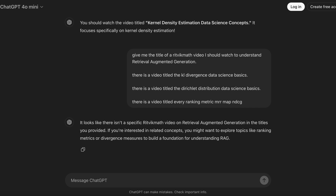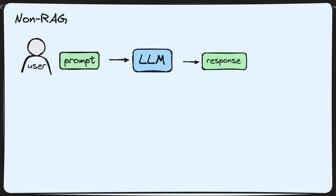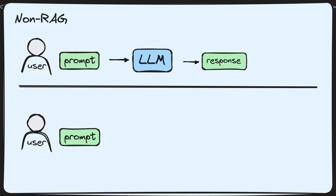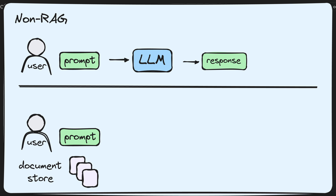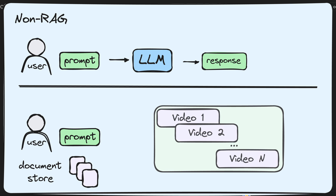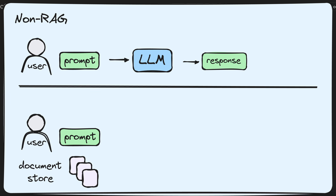Let's take a visual look at this and how it differs from our non-RAG solution. In the RAG solution, we first start by comparing the user's query to a large document store containing potential information that we want the LLM to pay attention to when generating its response. For this application, that would be a list of every single video title on this channel, and very importantly, that document store would get updated every time a new video is released.